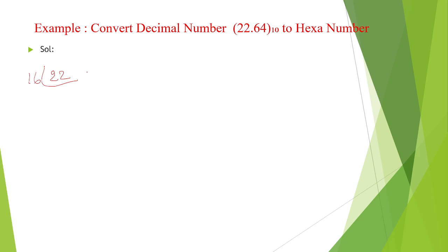If it is octal, divide with 8. If it is binary, divide with 2. So therefore, it is hexadecimal we need to convert, that is why divide with 16.